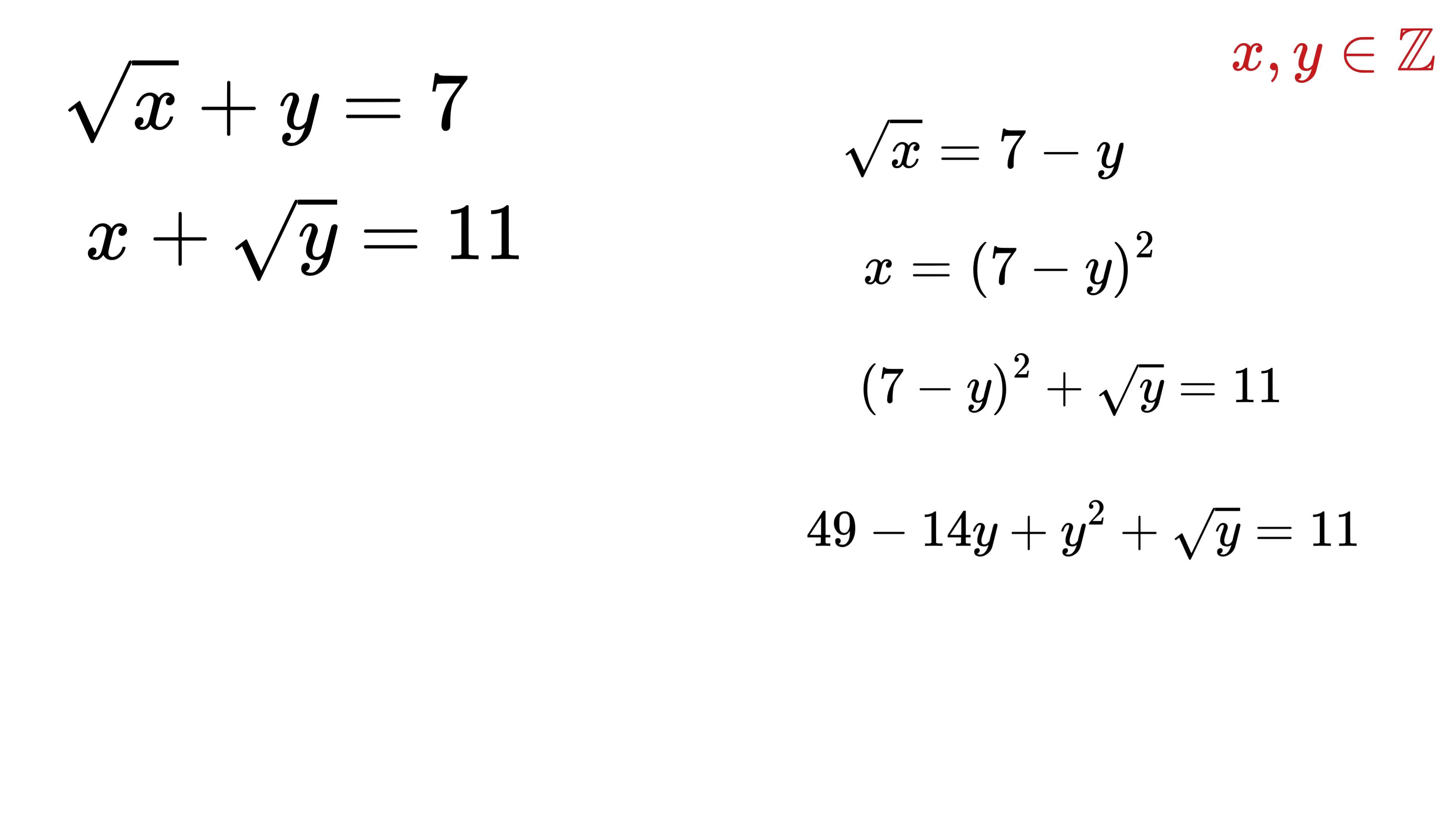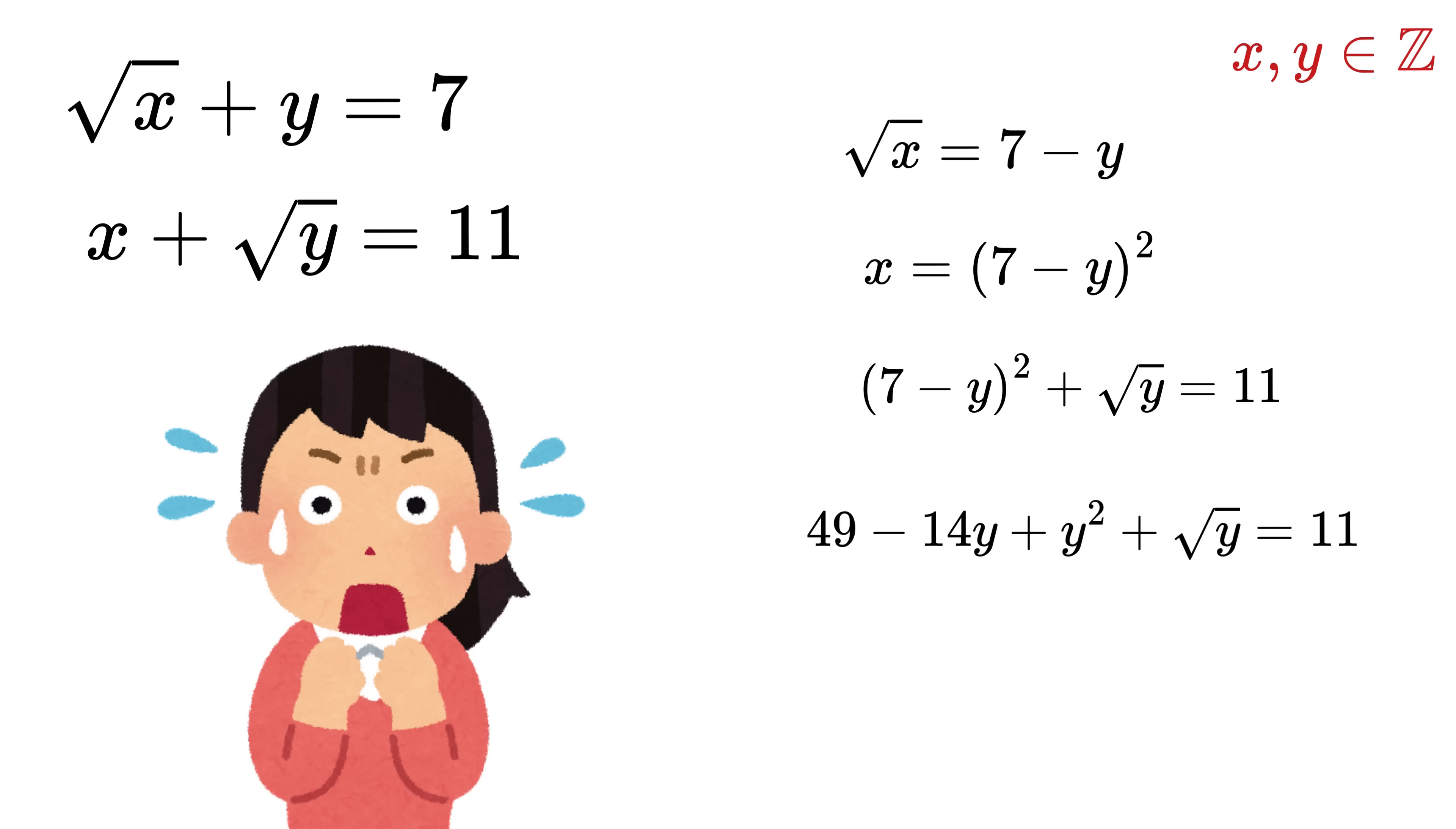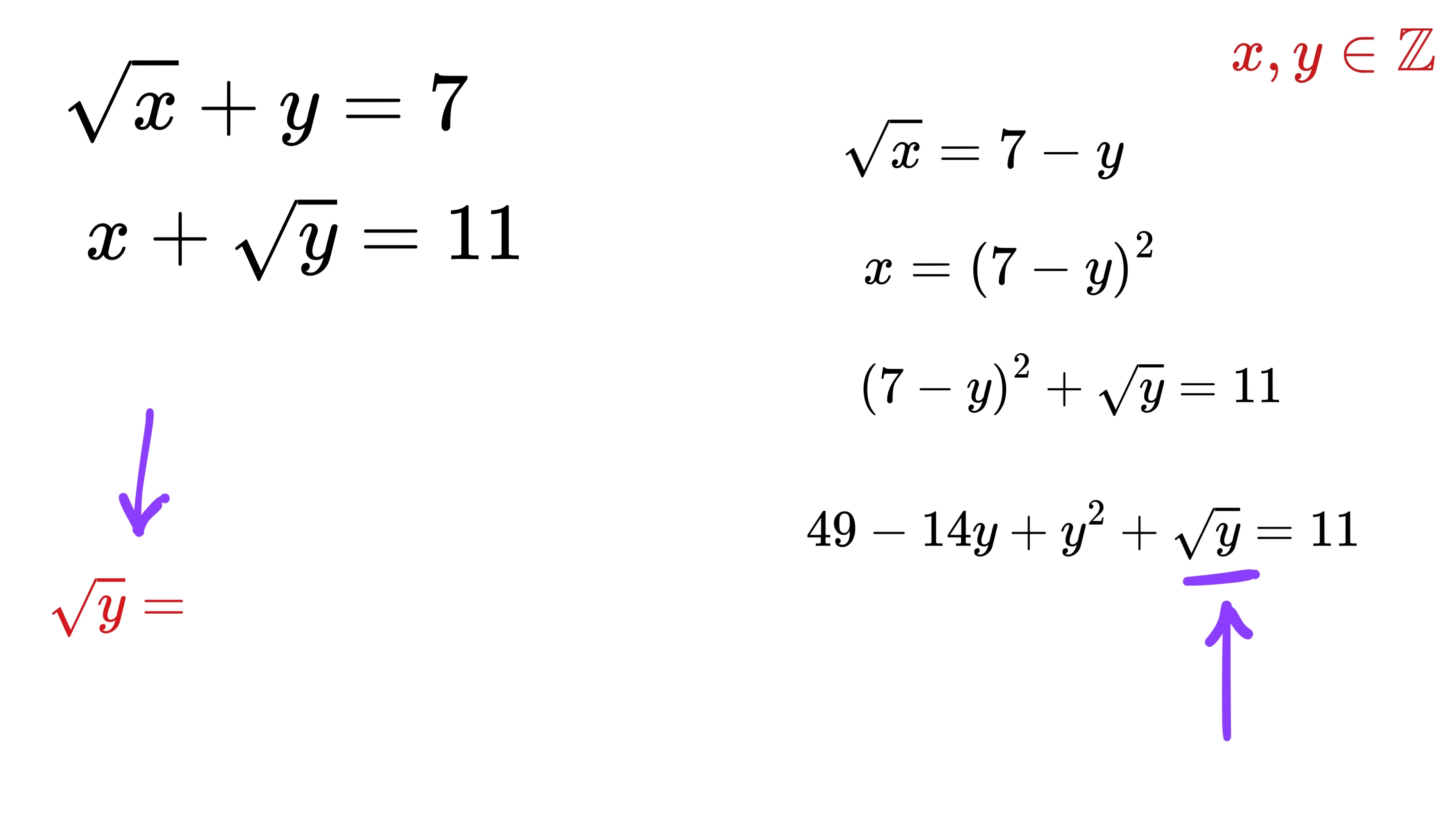Now here comes the part which is scarier than the Conjuring movies altogether. You might think, take this square root of y as some variable r, so y becomes r square, and squaring it one more time gives y square as r raised to power 4.